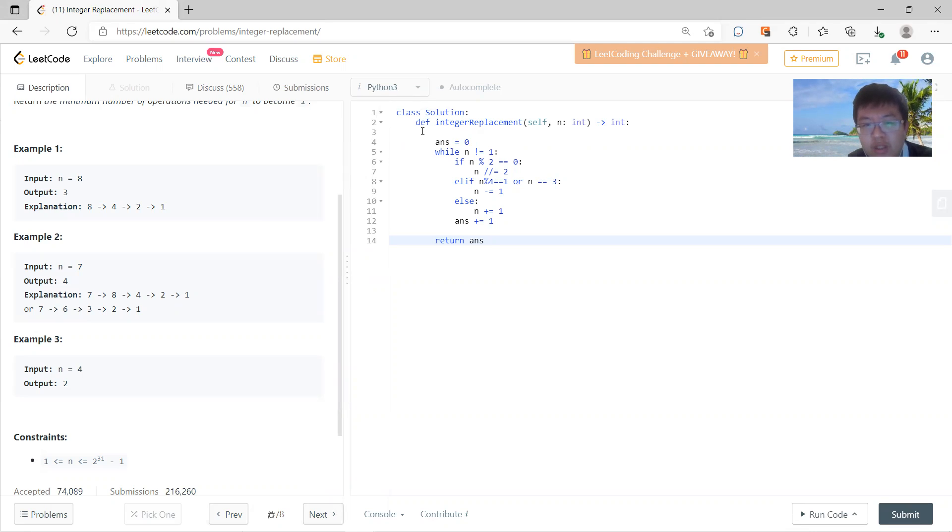It says that if n mod 4 is 1, then you must minus 1. If n mod 4 is not 1, then you should add 1. Okay, so exception is n equals 3. Okay, so then this is the answer.